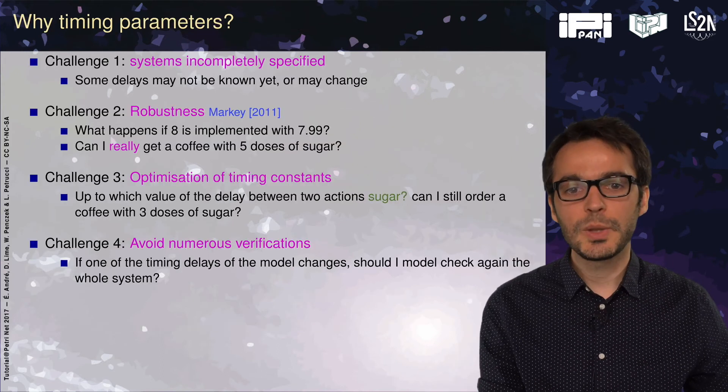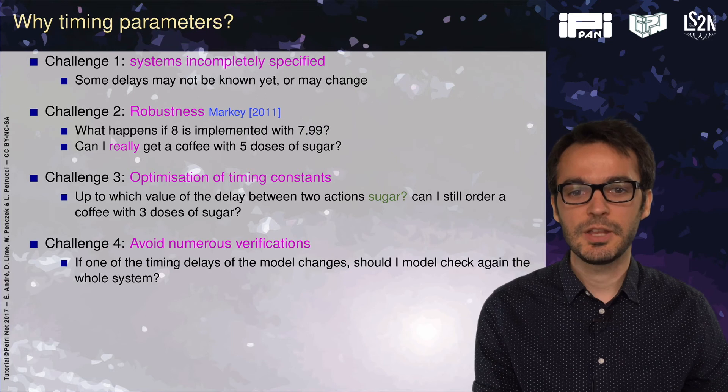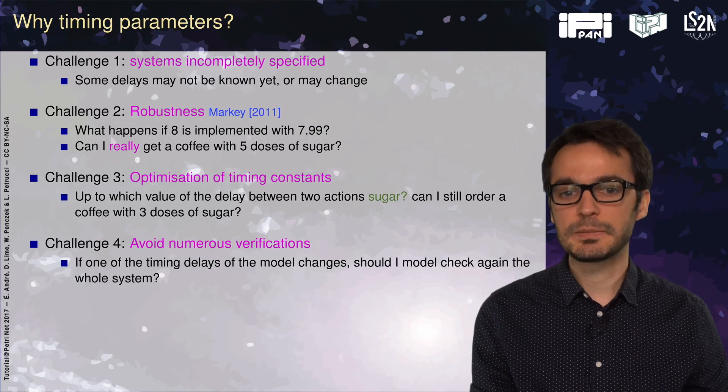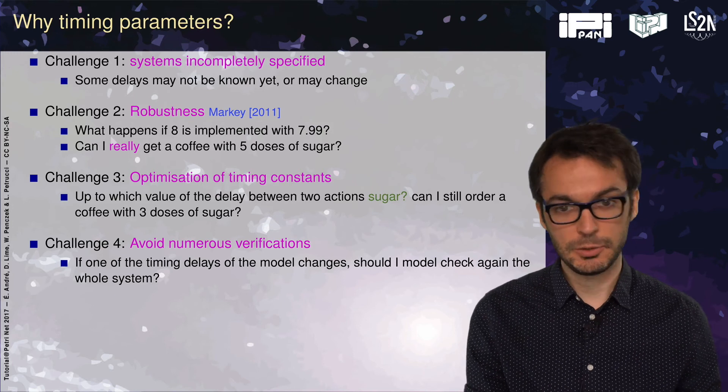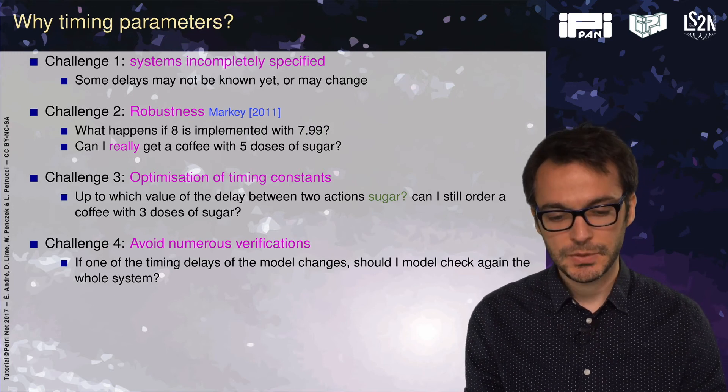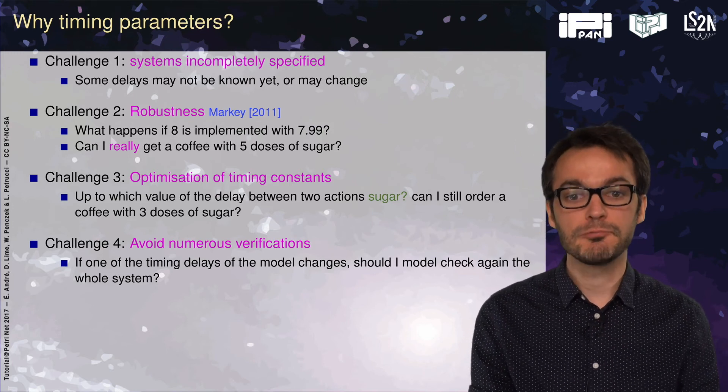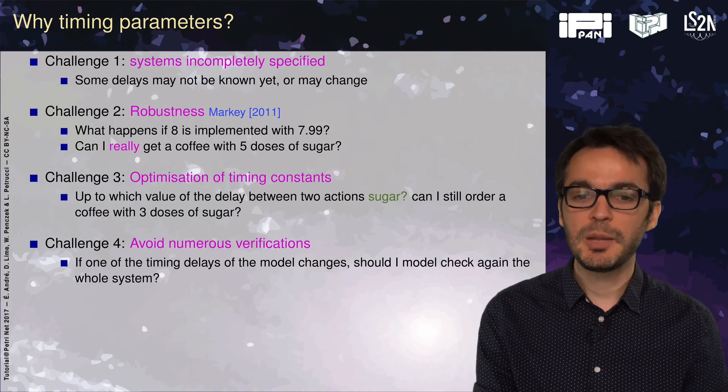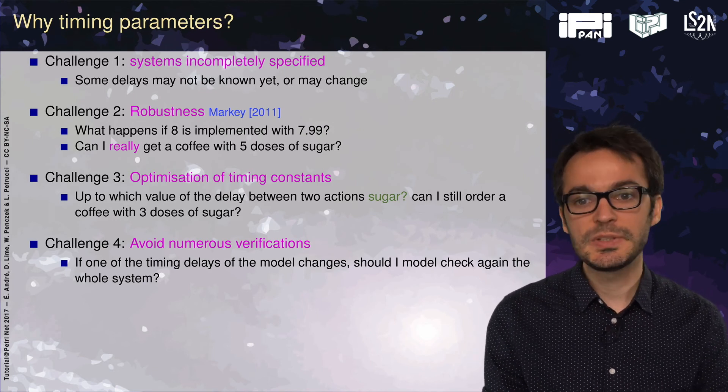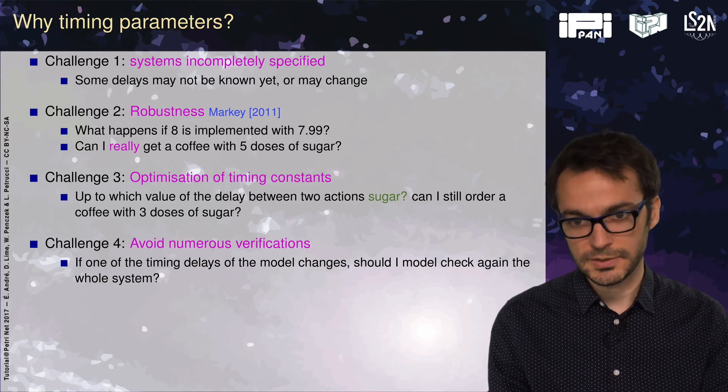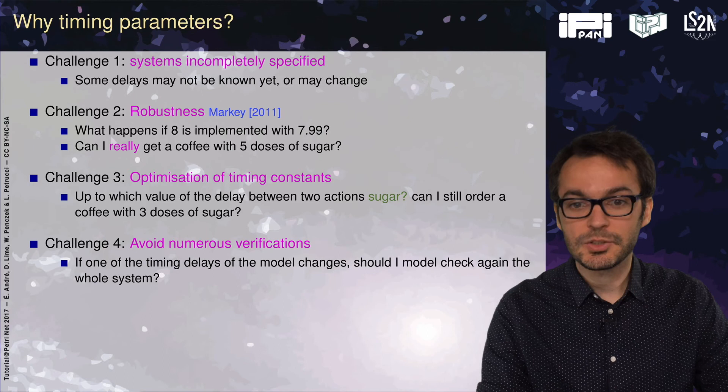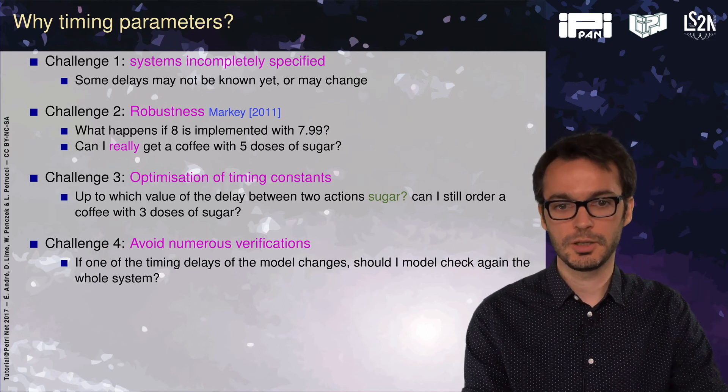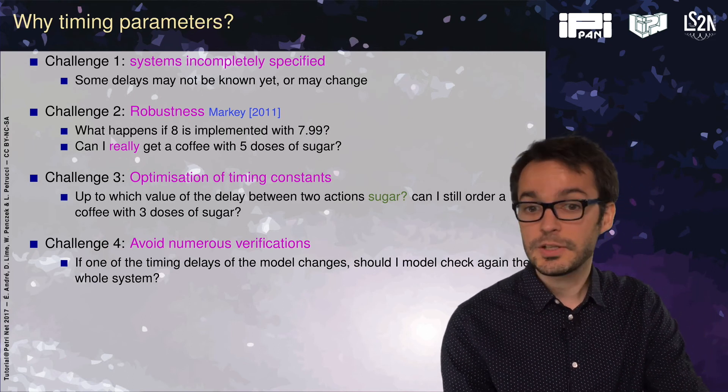Why do we have timing parameters? The first challenge is that systems may be incompletely specified. Some delays may not be known or may change and we would still like to verify the system. A second challenge is robustness. What happens if a timing constant, for instance 8, is implemented with something very close but not equal, for instance 7.99? And another question is can I really get a coffee with five doses of sugar?